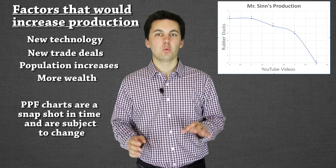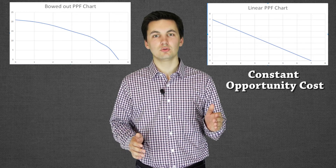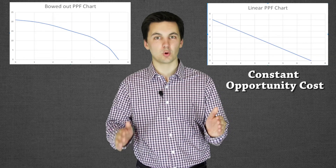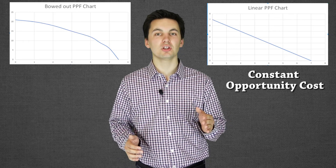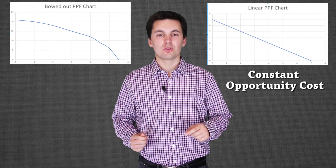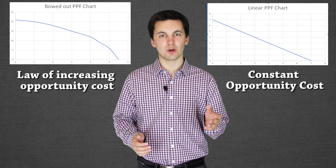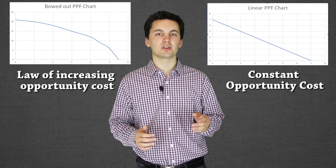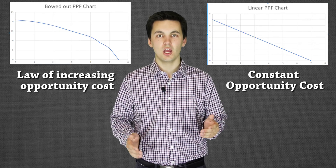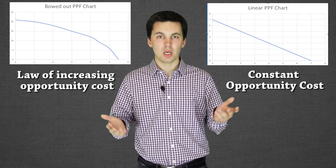Another important thing to understand is what's happening with opportunity costs, and an easy way to tell is by looking at it graphically. If we see a linear PPF chart, we have a constant opportunity cost — meaning as we decide to make our trade-off, we don't give up more; the opportunity cost continues to stay the same. However, if we see a bowed-out graph, the law of increasing opportunity cost is in effect. As we continue to produce more of one resource over another, we will continue to give up more and more. A linear PPF has constant opportunity cost no matter where we produce, while a bowed-out one has increasing opportunity cost, making it essentially more expensive as our opportunity cost grows higher.